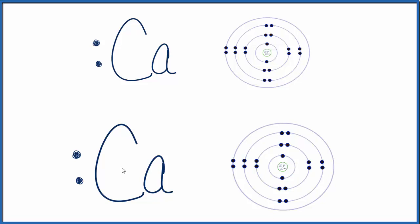because that 2+, that positive 2, means we've lost two negative charges, so we've lost two electrons, which are negative. So let's get rid of those. Take these two here, they're gone, and then let's take these two here, they're the same ones.